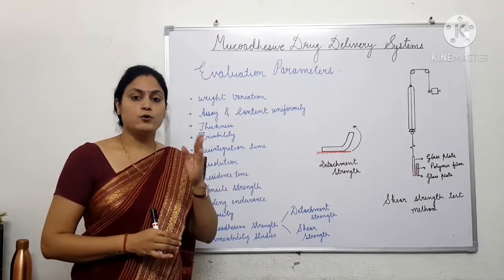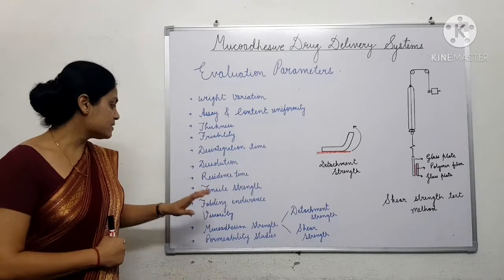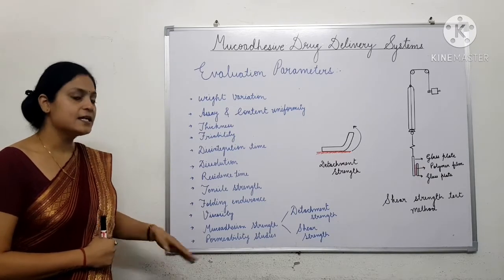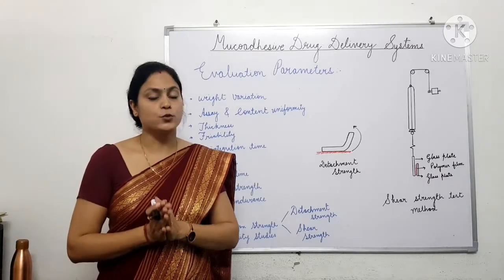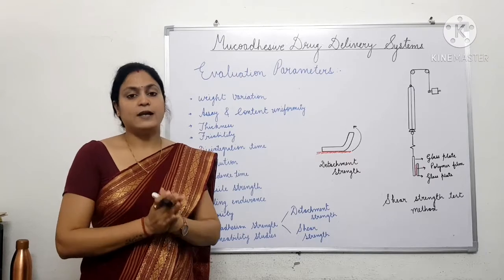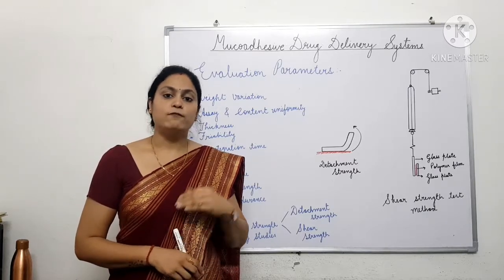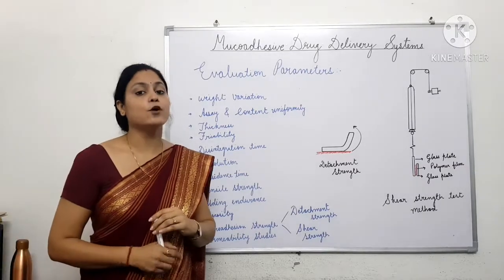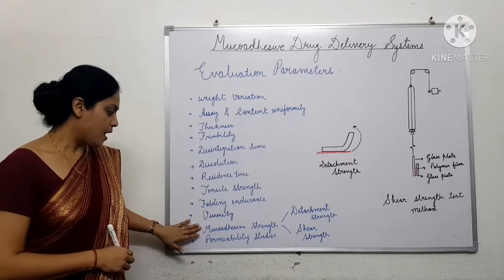If the muco-adhesive dosage form is a semi-solid dosage form such as gel, ointment, or cream, then various parameters such as viscosity — apart from muco-adhesive studies and permeability studies — are evaluated. So it depends on which dosage form is formulated as muco-adhesive device: if it is a tablet, film or patch, or gel or spray, different evaluation parameters apply. The common parameters for all muco-adhesive drug delivery devices are muco-adhesive strength and swelling index.